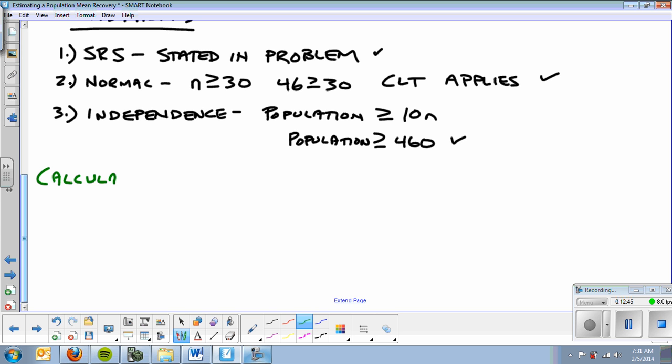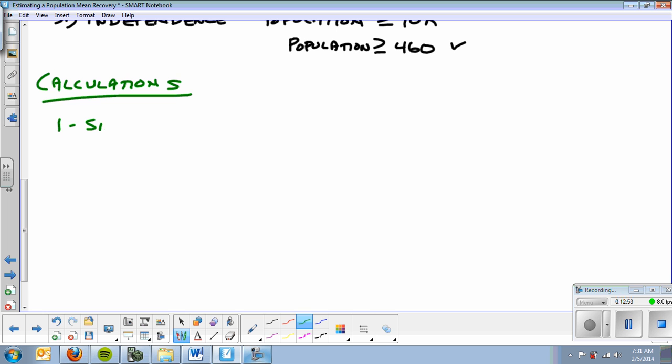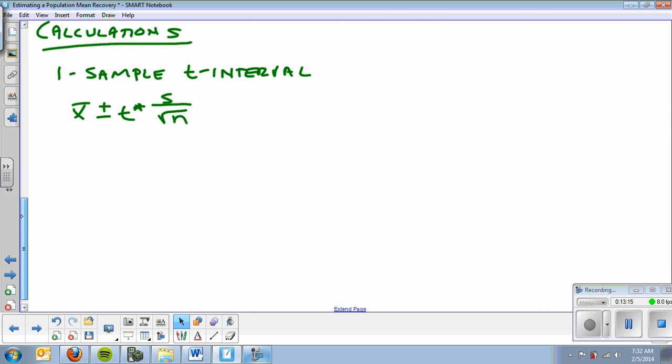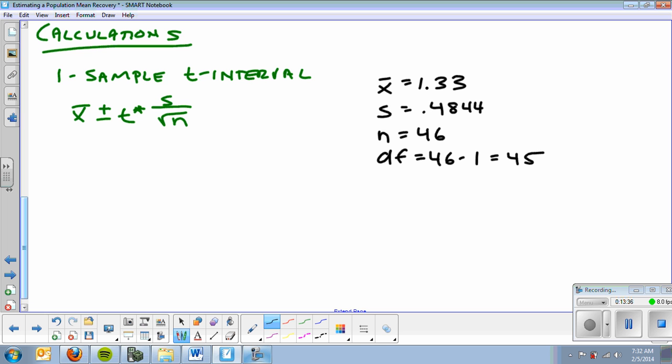Now for the fun part. Calculations. First thing I've got to do is identify what type of interval I am constructing. It is a one-sample T interval. And then I write my formula. X bar plus or minus T star S over the square root of N. I'm creating a 95% confidence interval. Off to the side here, I'm going to list a few things. X bar, 1.33. S was 0.4844. N is 46. That makes my degrees of freedom 46 minus 1, which is 45.